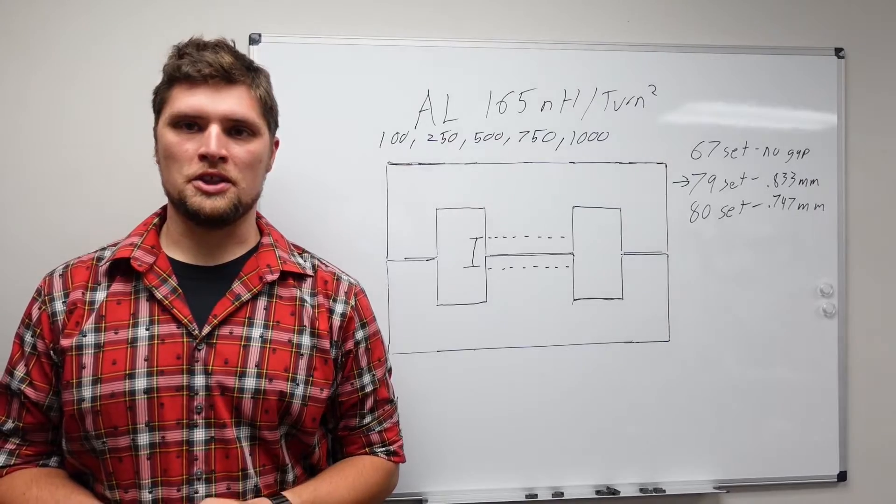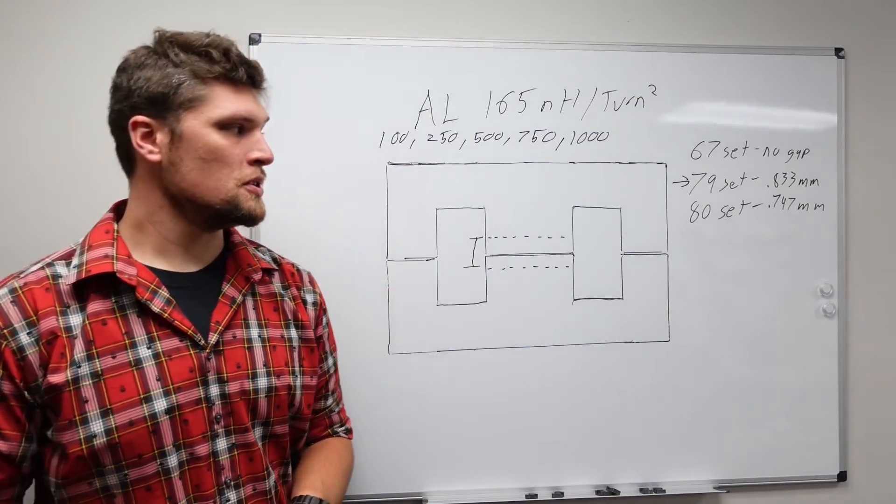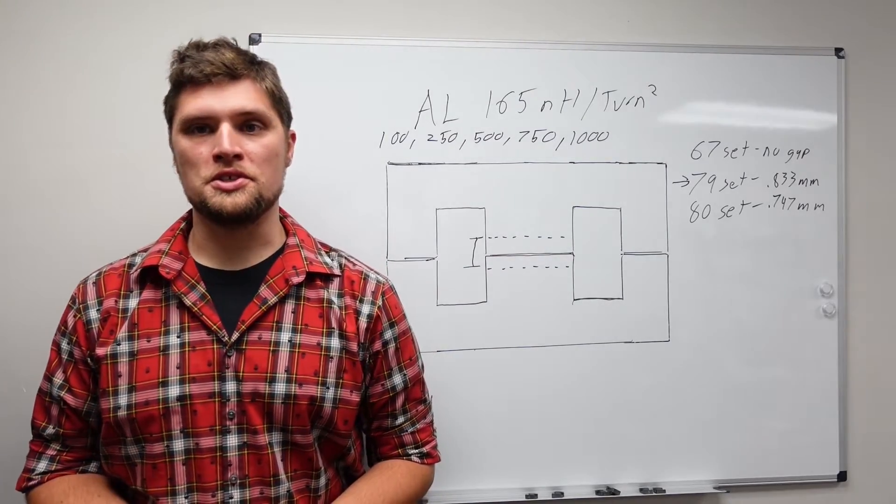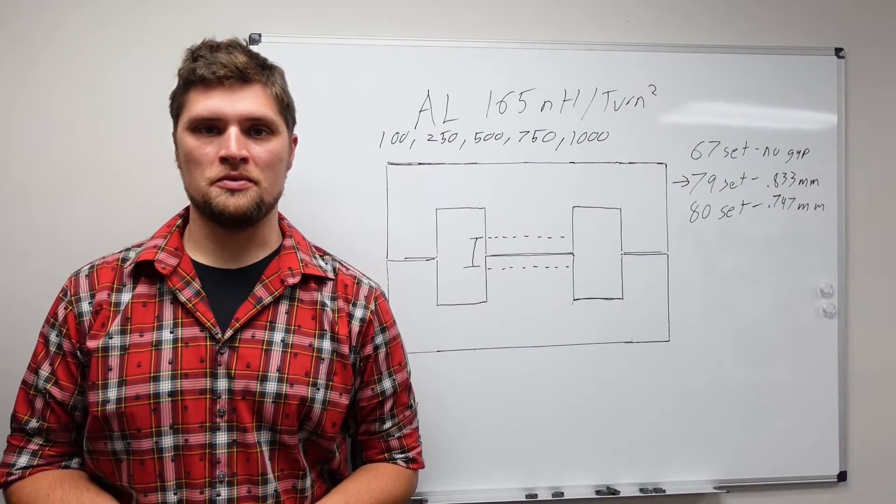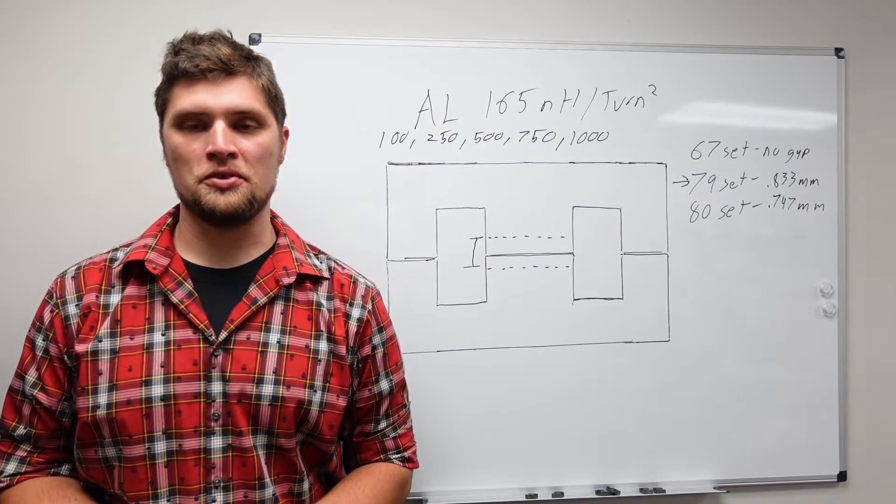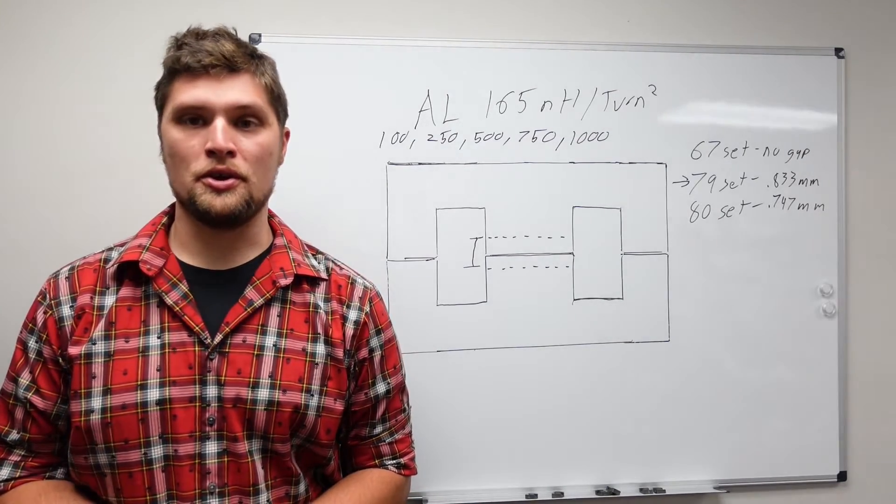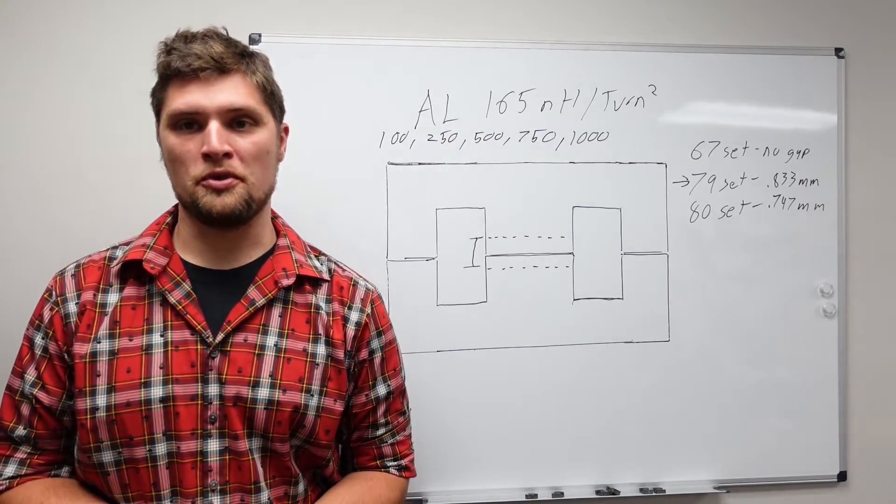So now we've taken a look at the performance of our three different core sets and our three different materials. We found that as the frequency increases, the 67 material core set not having a gap tends to work a little bit better than the other two materials, despite the material being what in theory should be a little bit worse of a performer.